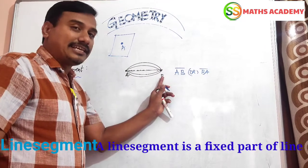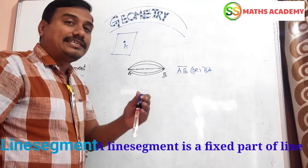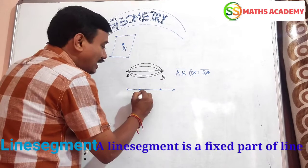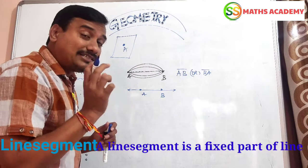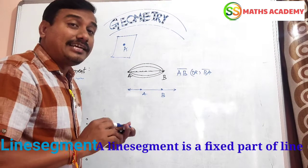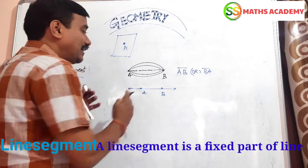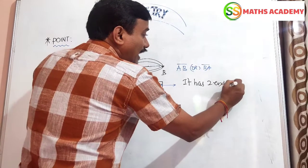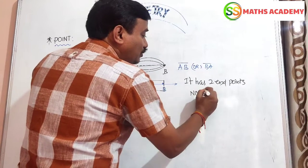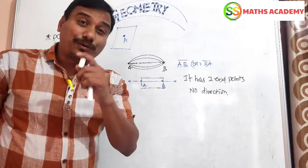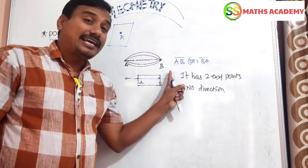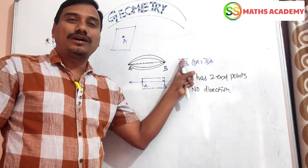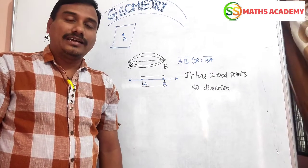A line segment is a finite part of a line. It has two end points and has no direction. It is written as AB line segment or BA line segment. To recap: a line segment is a finite part of a line, it has two end points, no direction, and is written as AB or BA.